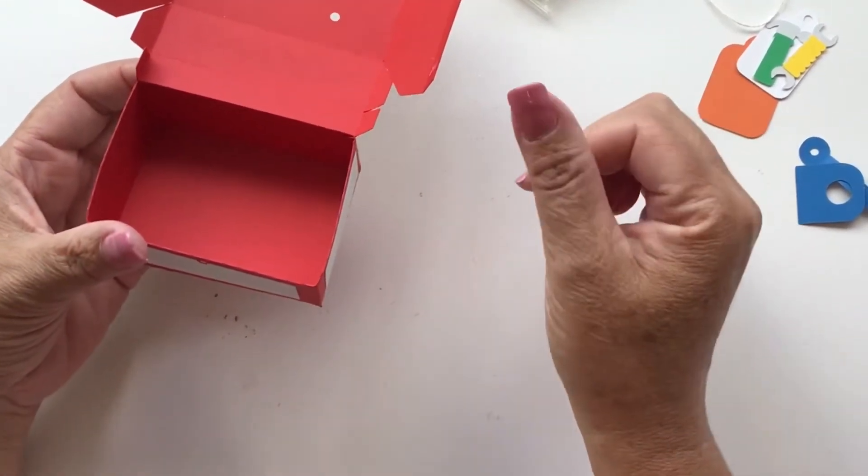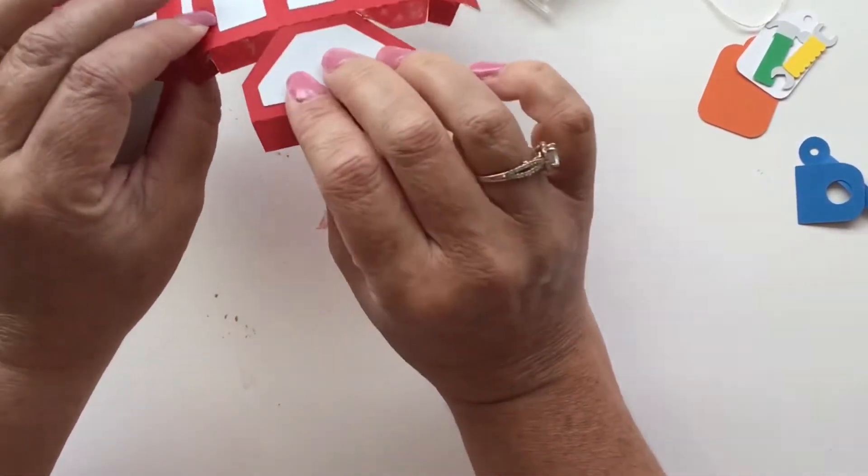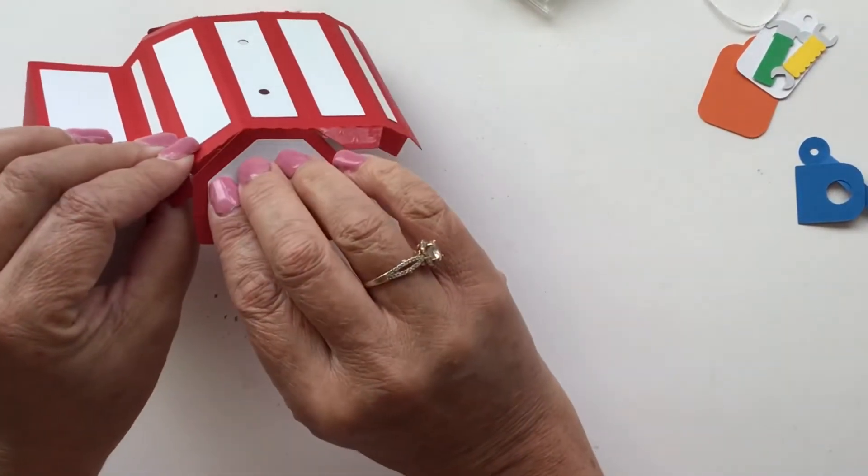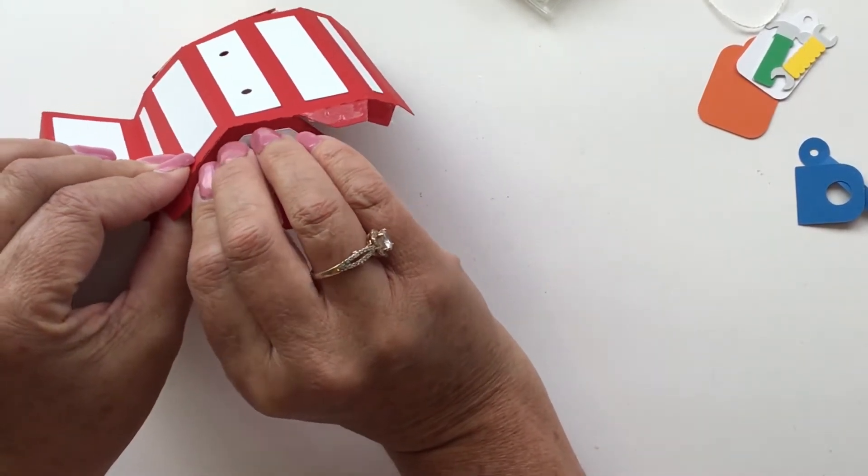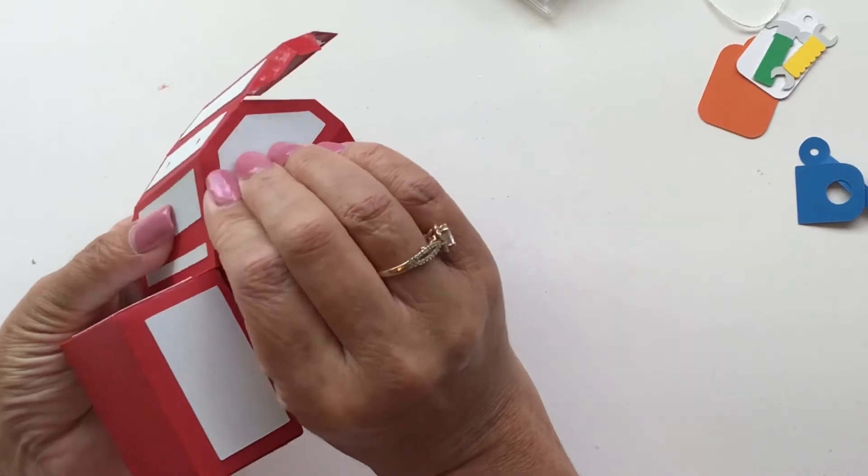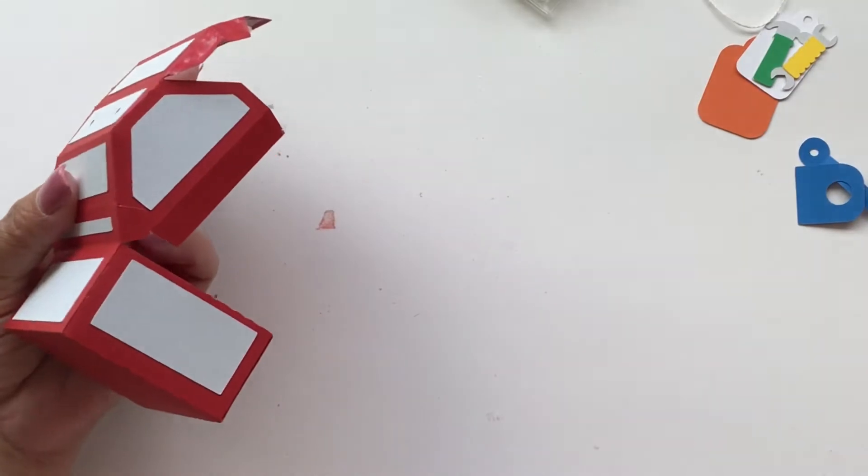Now we're going to do the top which is a little bit tricky but it's not hard at all. So you want this angle tab to go on the angle of the lid.